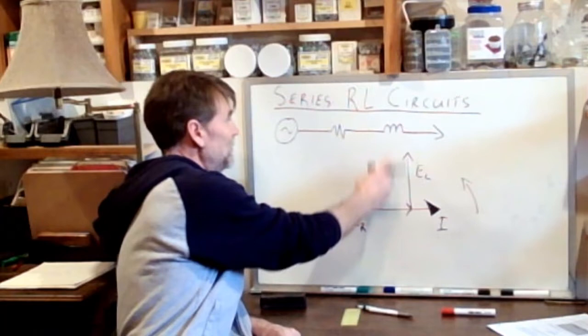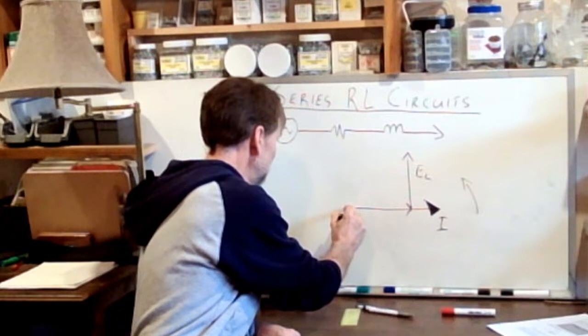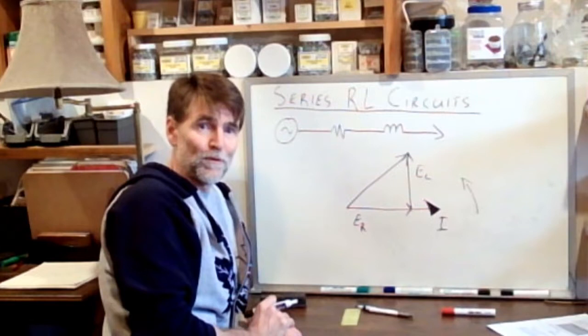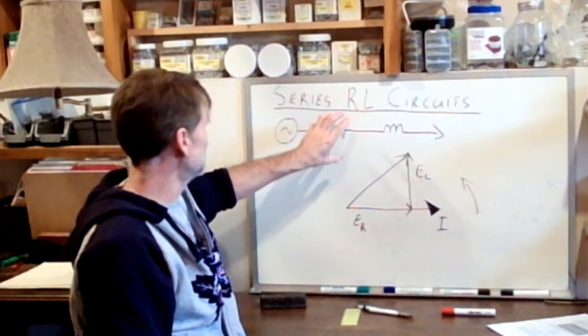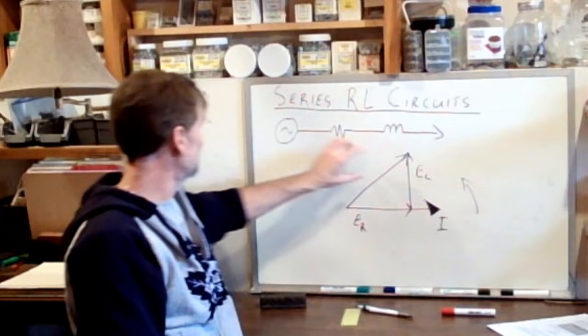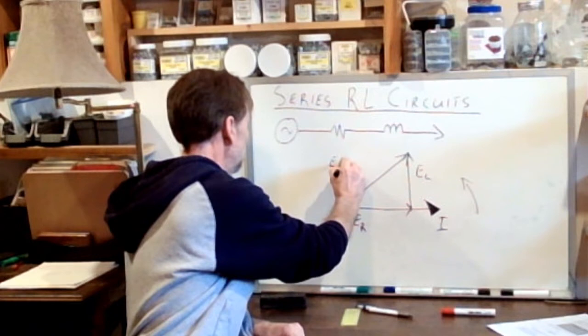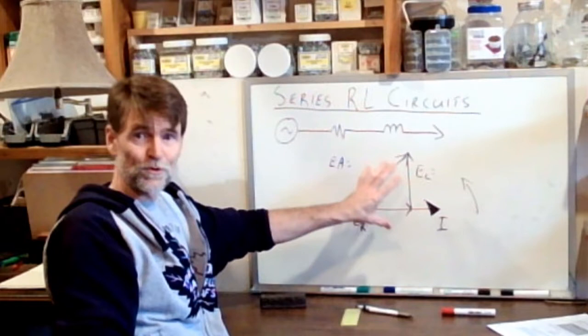And we have placed them tip to tail so we can do our vector addition. So what we're left with is the resultant vector, which is the hypotenuse of our right-angled triangle. And this represents the total voltage in the circuit. So here we have ER, the voltage at this part of the circuit. EL is the voltage at this part of the circuit. And the hypotenuse represents the total voltage of the circuit, which is EA, the applied voltage. So there's our variables. That's our triangle.